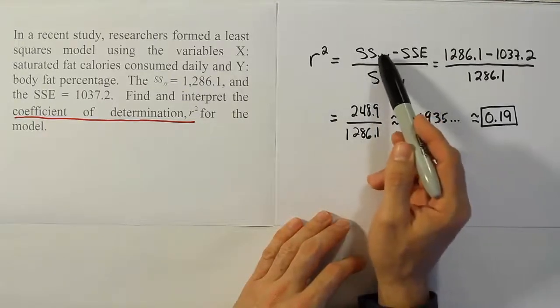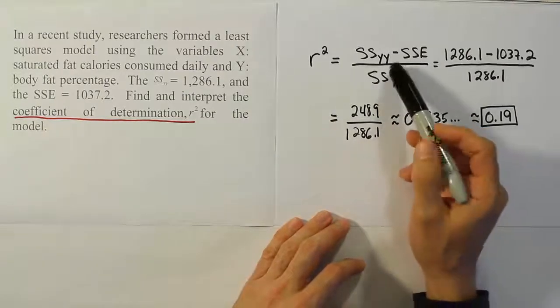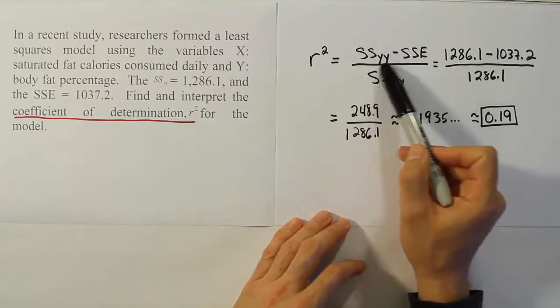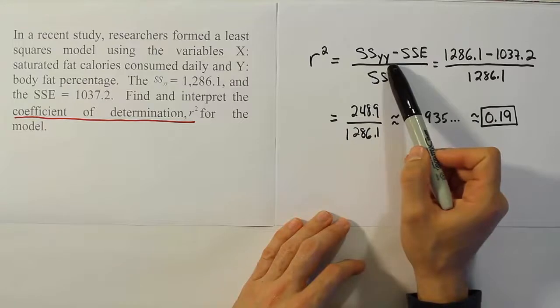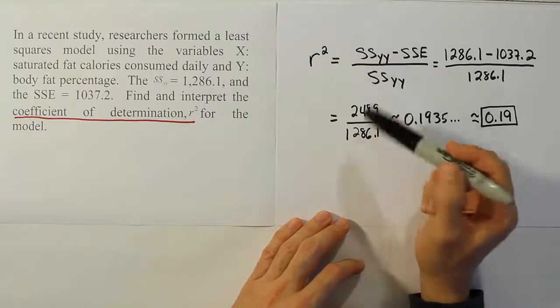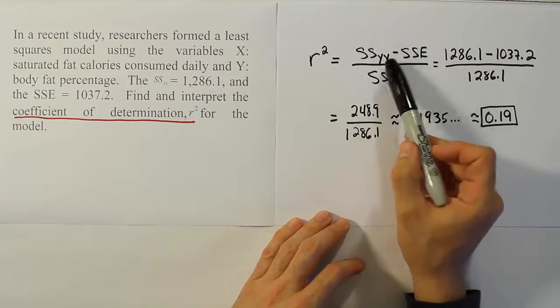That predictor variable X is not the only thing that determines how Y turns out. So, the differences between our sample Y values that we see, they're due to something. We think that X is one of the causes for the differences.